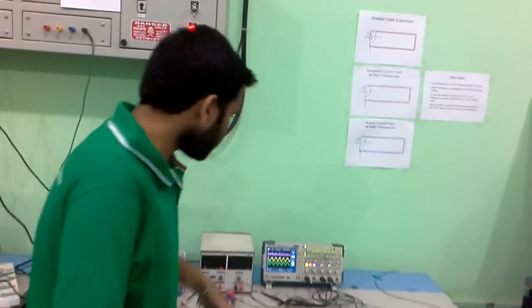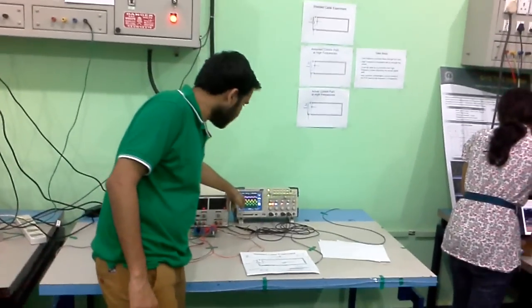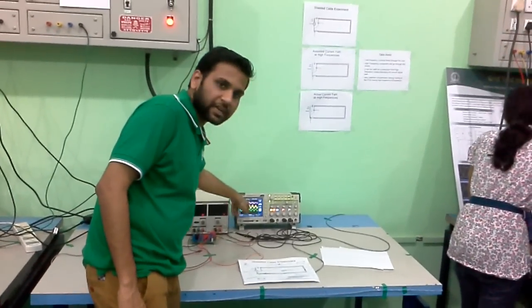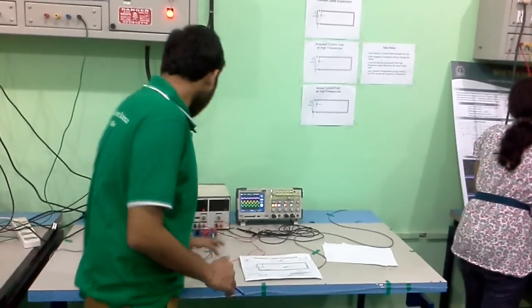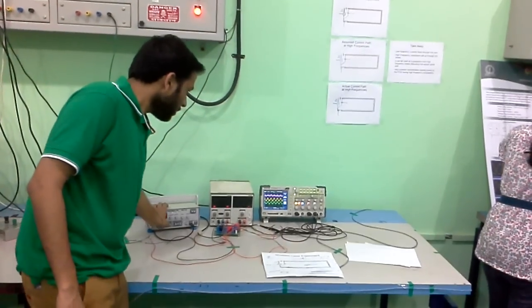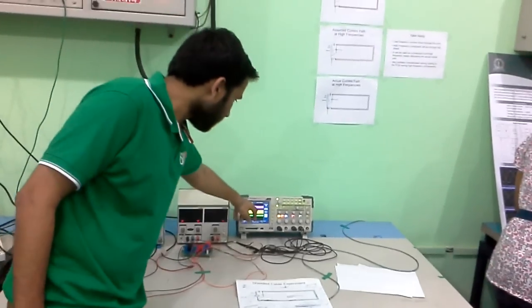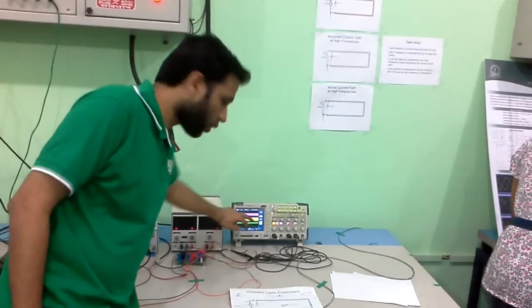So in order to avoid the distortion, I have provided the sheath so that high-frequency current goes to sheath. Now if I increase the frequency, you can see more current is going through sheath and less current is going through core.